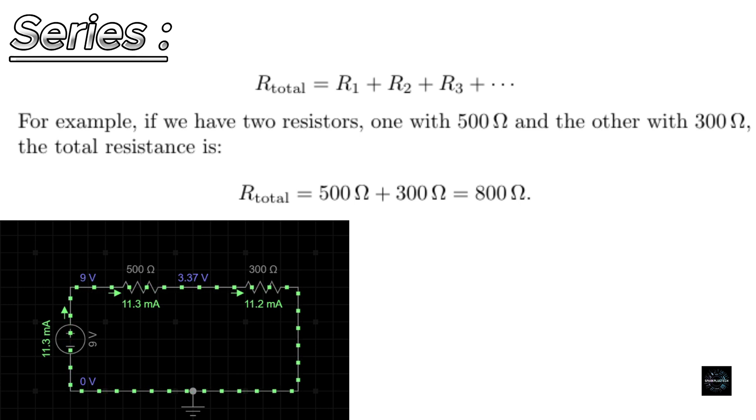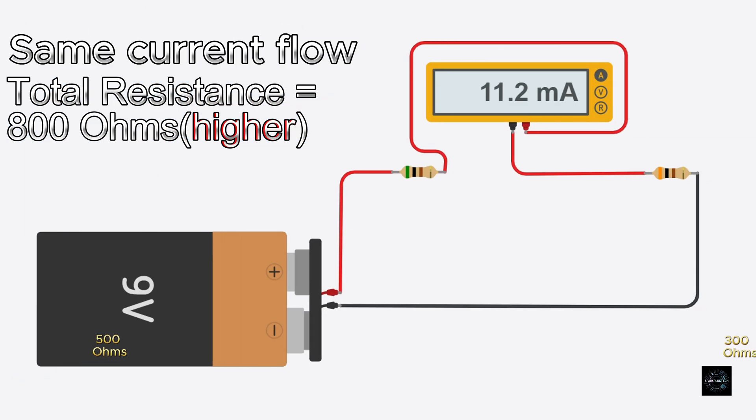Now, let's simulate this. As you can see, the current is the same through both resistors and the total resistance adds up.